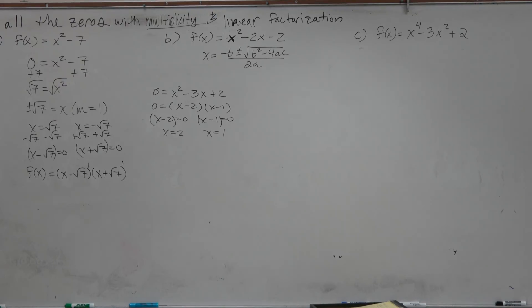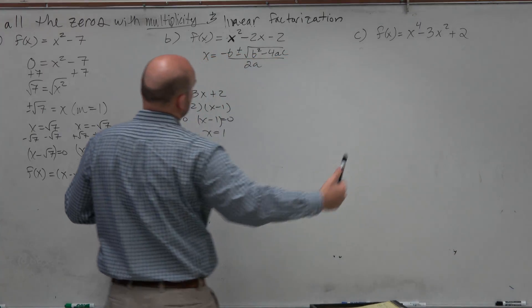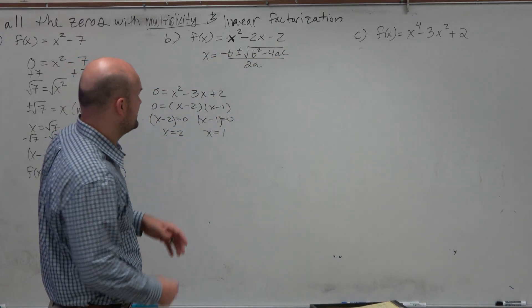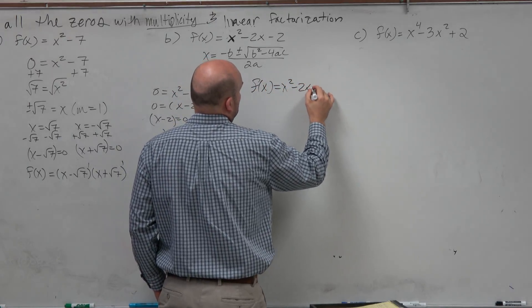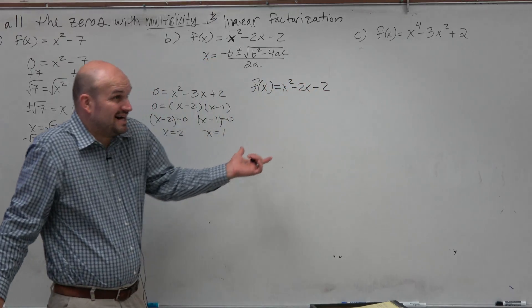Because typically we're going to be doing factoring, right? And for the rest of the examples that I assigned for you guys, we're going to be looking at factoring. But what if I had the problem f(x) = x² - 2x - 2? This is not factorable.